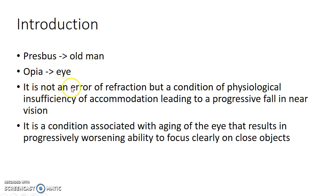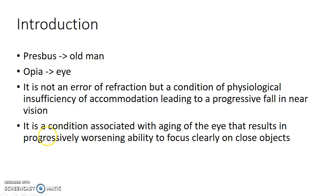Presbyopia is not an error of refraction but a condition of physiological insufficiency of accommodation leading to a progressive fall in near vision. It is a condition associated with aging of the eye that results in progressively worsening ability to focus clearly on close objects.